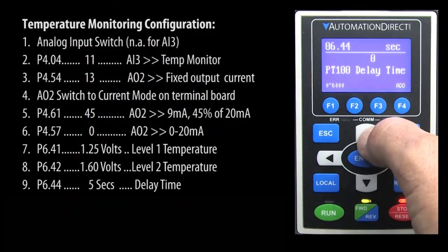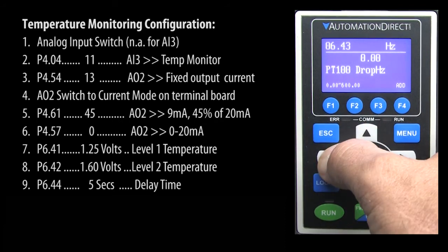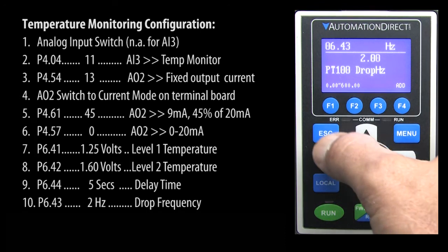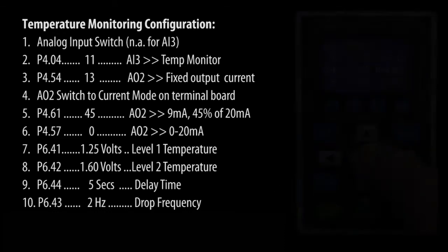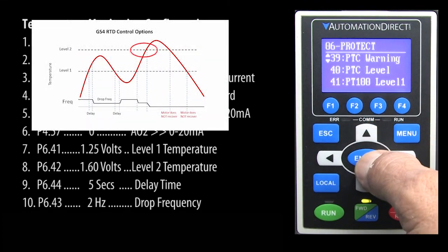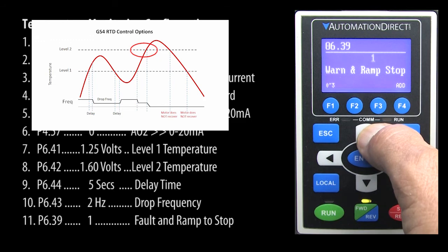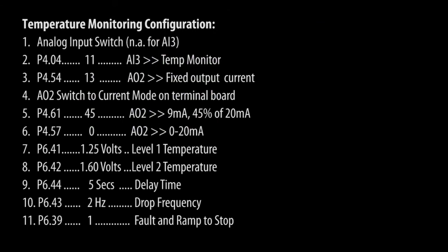Just be sure level 1 parameter is non-zero and below level 2. So, when we hit level 1, let's delay 5 seconds and if we are still at level 1 after the 5 seconds, drop the drive's frequency to 2 Hz. Remember this number has to be greater than 0 if you are using an RTD. Putting a 0 in here turns off the RTD function and enables the PTC function. If we hit level 2, then immediately do whatever is in parameter 639. In our example, we'll fault and ramp to a stop. That was a lot of parameters, so here's a summary of what we just did.